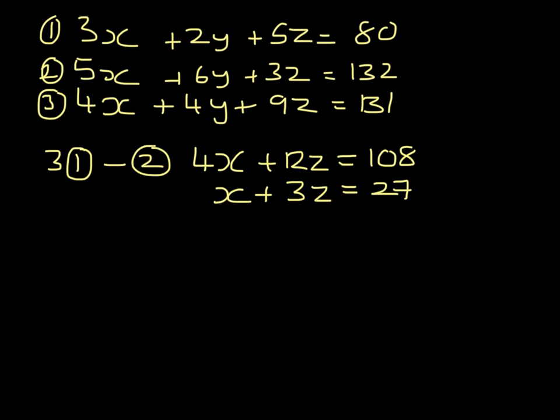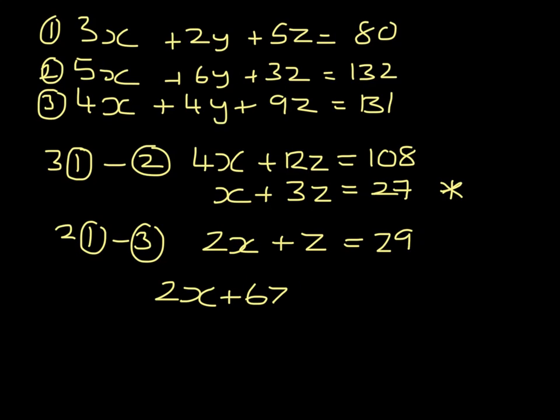This time I'm going to multiply equation 1 by 2 and take away equation 3. So I have 6x take away 4x, 4y take away 4y, 10z take away 9z, and 160 take away 131. If I multiply this equation by 2, I have 2x plus 6z equals 54. I also know that 2x plus z is 29, and whenever I subtract these, 5z has to equal 25.